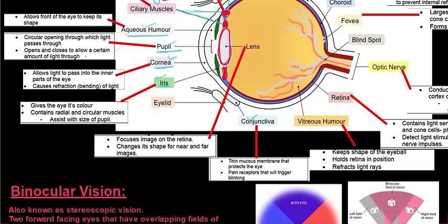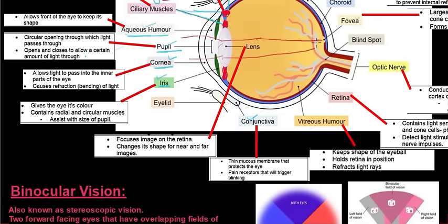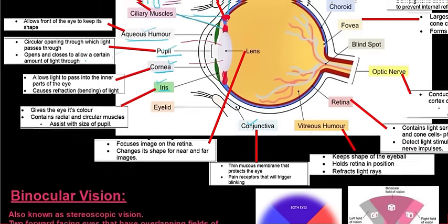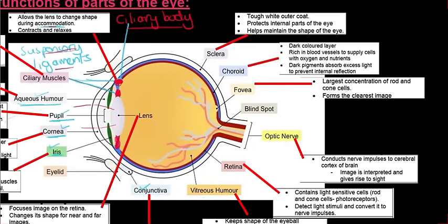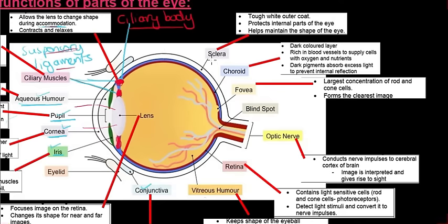The lens focuses the image on the retina. As light comes through the cornea and is refracted to a certain extent, the lens refracts it even further to focus the image onto the retina at the back. The lens also changes its shape for near and far images, which we'll look at in a bit.